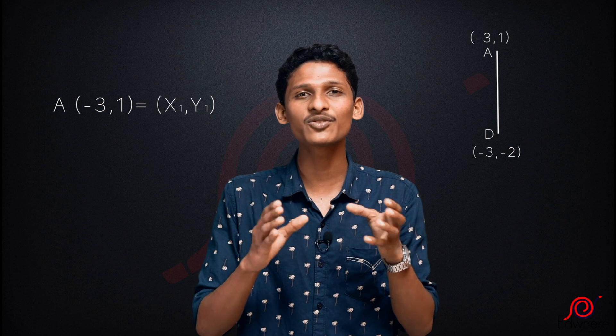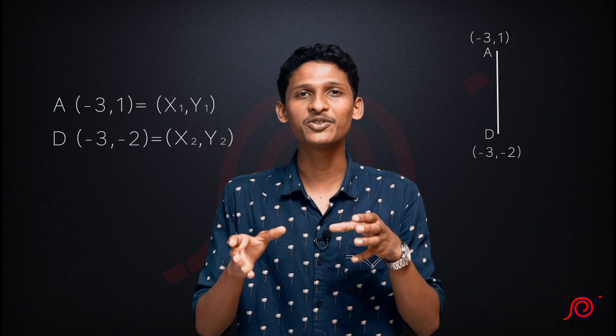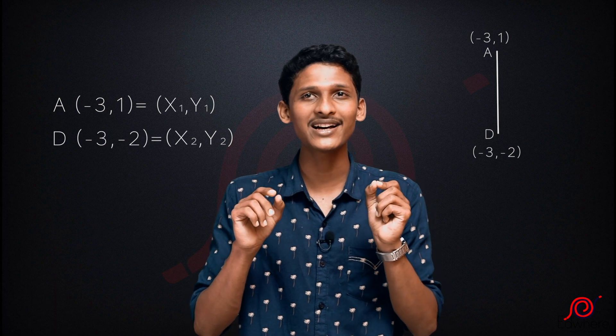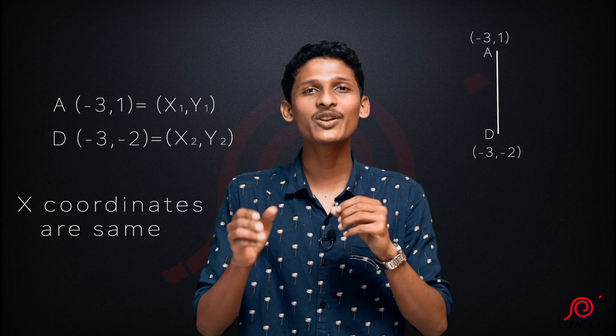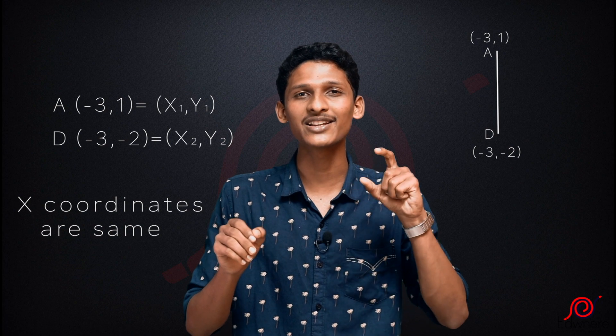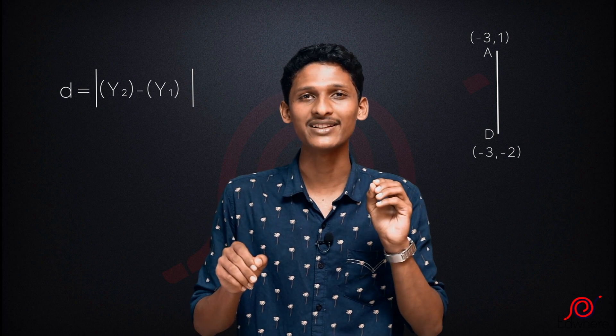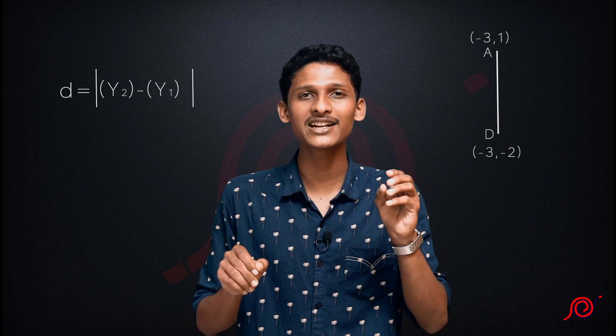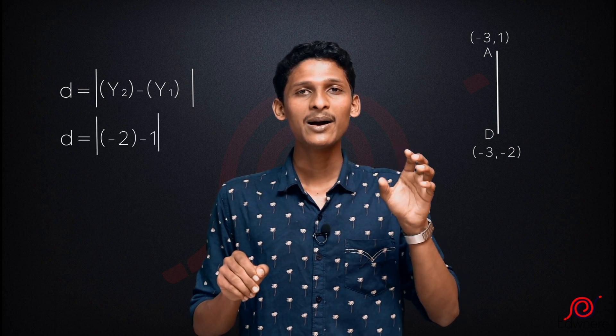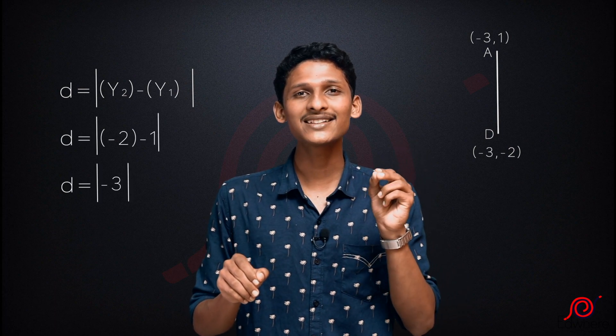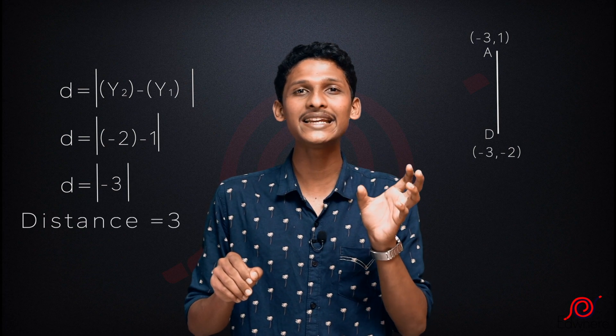We have the length of AD. Point A is (-3, 1) and point D is (-3, -2). Since the x-coordinates are the same, the distance formula simplifies: distance = |y2 - y1| = |-2 - 1| = |-3| = 3. The distance AD is equal to 3.